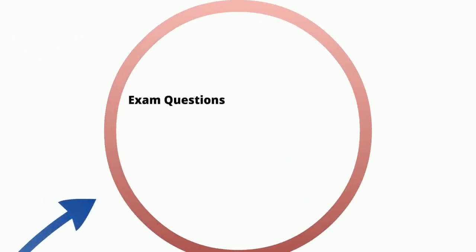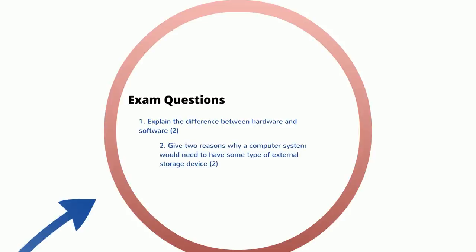If we have a quick look, these are the sorts of exam questions that might come out: Explain the difference between hardware and software. Give two reasons why a computer system would need to have some type of external storage device. Describe the difference between system software and application software. Have a little think and see if you can do those questions in your head, then go back to the video and see if you can find the answers. Thank you for watching — feel free to come back and look at some more videos.